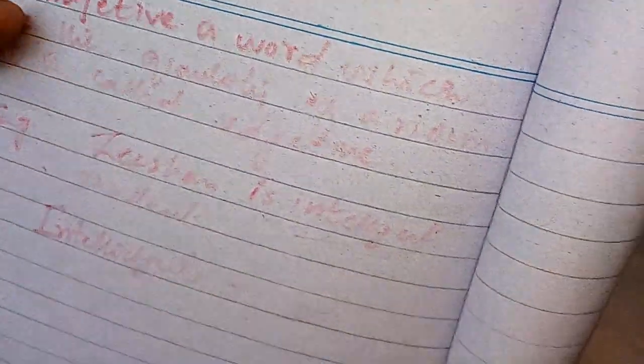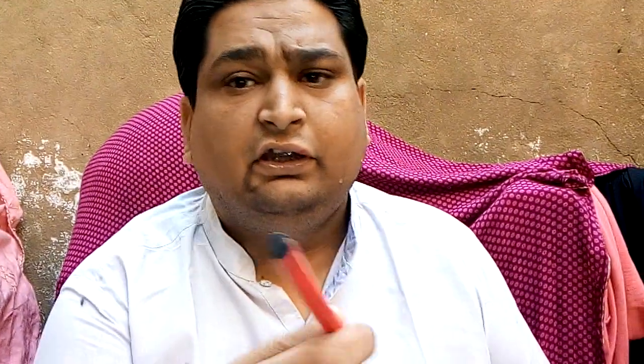Just for two minutes we take a break — the pen is not working, so I will bring another pen. Please give me another pen. Thank you. Now let's start from the beginning because the pen was not working. Adjective is a word which shows the quality of noun.